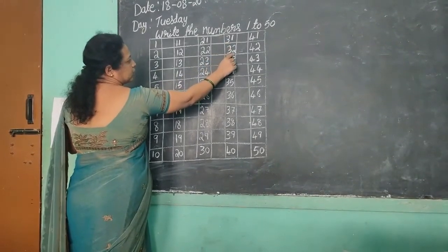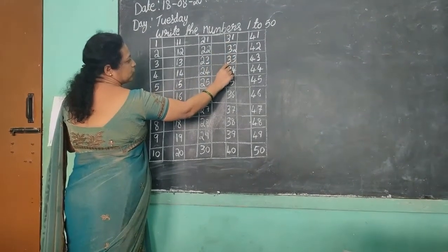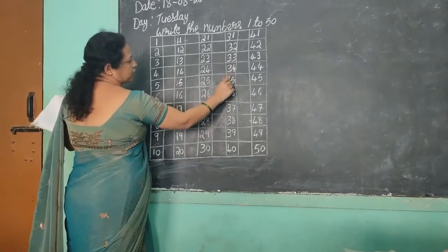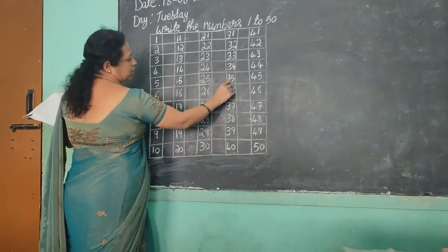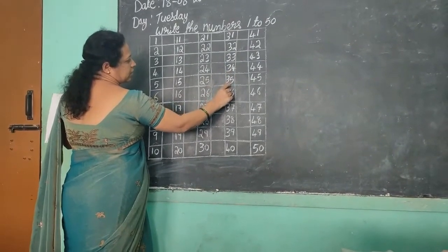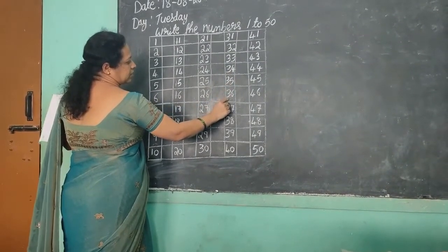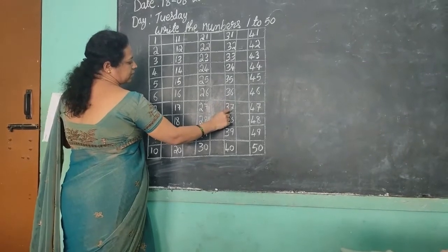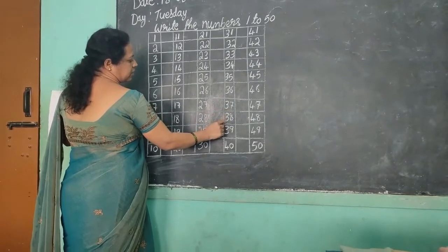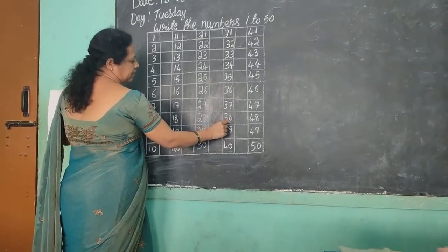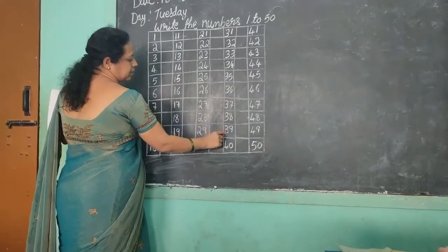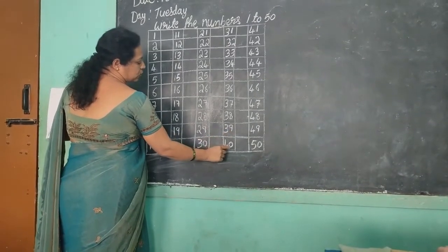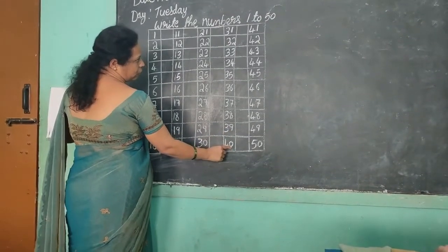3, 2 — 32. 3, 3 — 33. 3, 4 — 34. 3, 5 — 35. 3, 6 — 36. 3, 7 — 37. 3, 8 — 38. 3, 9 — 39. 4, 0 — 40.